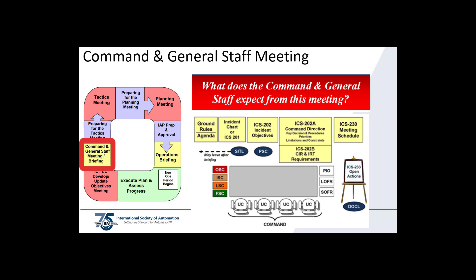The wall visuals will be, at a minimum and in order: Number 1, ground rules; Number 2, the agenda; Number 3, incident chart and/or the ICS-201; Number 4, ICS-202 incident objectives; Number 5, ICS-202A command direction; Number 6, ICS-202B critical information requirements and incident response team requirements; and ICS-230, the meeting schedule.